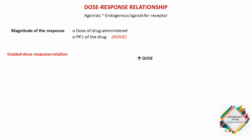When talking about graded dose response relations, as the concentration of a drug increases, its pharmacological effect also gradually increases until all the receptors are occupied. When all the receptors get occupied, the maximum effect is produced. When we increase the dose or concentration, the effect gradually increases until all available receptors are occupied, producing the maximum effect.